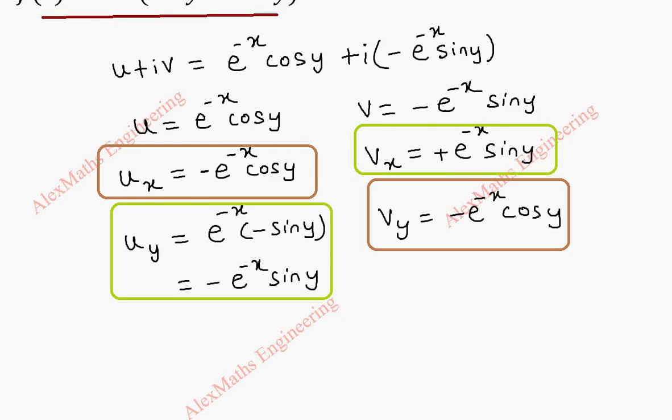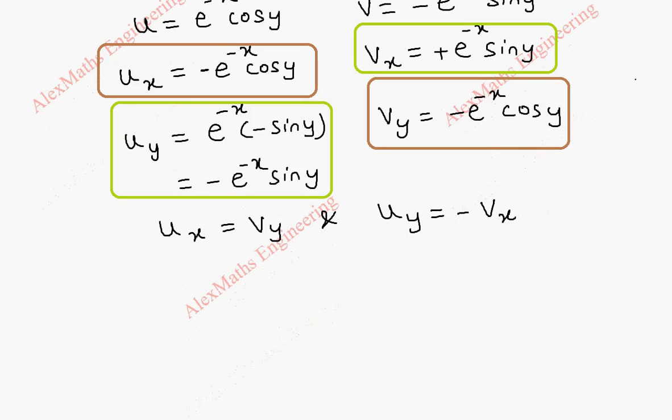So we can say that u_x equal to v_y and u_y equal to minus v_x. So we see that the CR equations are satisfied. So this term satisfies the CR equation.